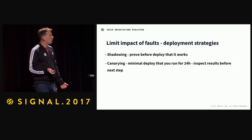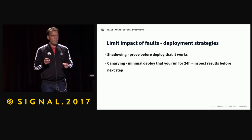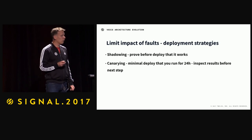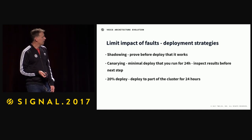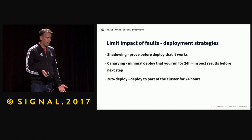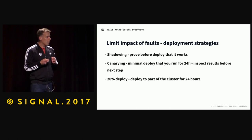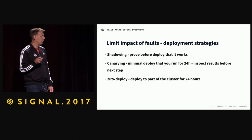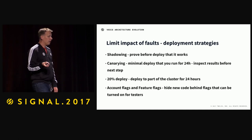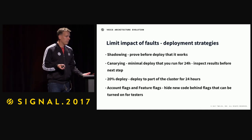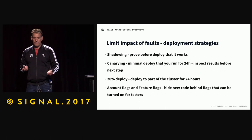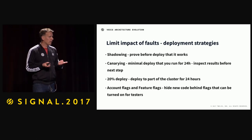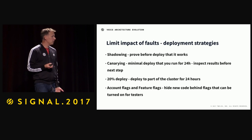You can do canarying, which means you deploy the very minimal unit of your new service and run it for 24 hours, then inspect the results before moving to the next stage. You do a partial deploy — like 20% — run it for 24 hours, compare the results, and if it's looking good you move on to full deploy. Another approach is deploying code but keeping it behind a feature flag so you can easily turn it off, and we can do this based on customer accounts as well as system-wide.